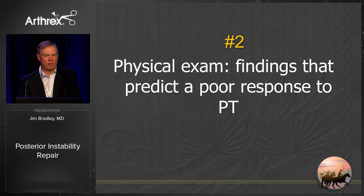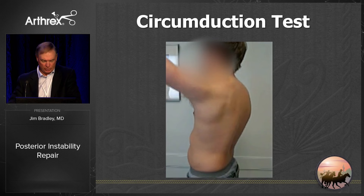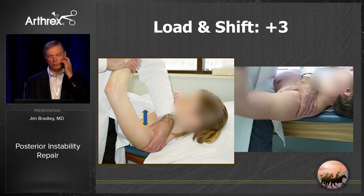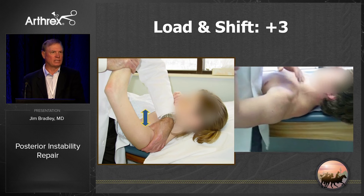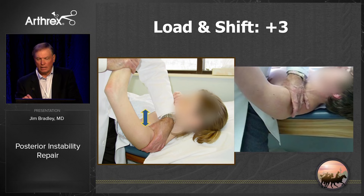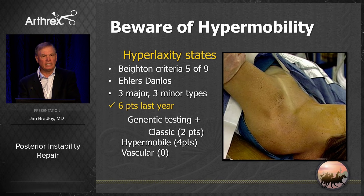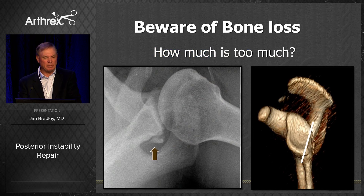The second thing we learned is physical exam findings that predict poor results for posterior instability. The circumduction test — where the arm goes out the back and then reduces — is one; I haven't gotten many people better once they show that. Another is a load and shift in neutral where they just pop right out the back. Also beware of hypermobility states: last year alone I diagnosed six people with Ehlers-Danlos syndrome, and you treat those much differently than normal athletes.